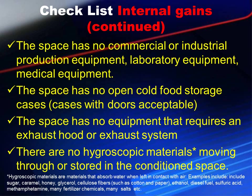Internal gains continued: the space has no commercial or industrial production equipment, laboratory equipment, or medical equipment. The space has no open cold food storage cases — cases with doors are acceptable. The space has no equipment that requires an exhaust hood or exhaust system. Other than bathroom exhaust and minor small kitchen exhaust, if you have a big hood for chemical designs or testing, that's not going to work for Manual N.